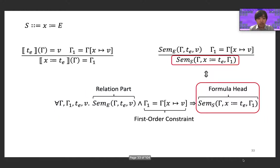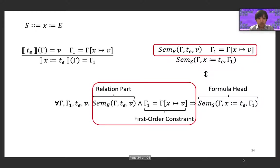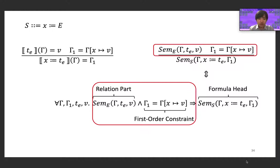It turns out that writing semantics in this format directly coincides with the definition of constrained horn clauses, which are implications that have a single relation as the conclusion and a conjunction of relations with a first-order constraint as the premise. The variables are universally quantified, meaning the rule holds for all possible variable configurations. Expressing semantics using constrained horn clauses not only gives us a formal logic-based method, it can also make it easier to reason about semantics, as CHCs are relatively easier to solve and more well-studied compared to arbitrary SMT formulas, as shown by solvers like Spacer. We'll sometimes use the term semantic rules to refer to CHCs applied as semantics throughout the talk.